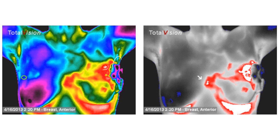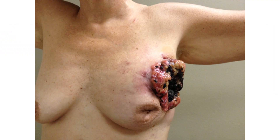And you can see again how necrotic this tissue has become, but yet the leading edge in the white right there — the super hot — is at the leading edge of that tumor. So even though the tumor has become necrotic, it's not letting up at this point.